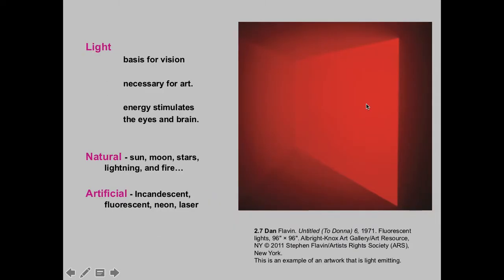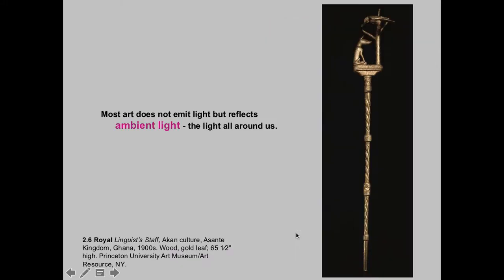Light is a sometimes confusing element. Some artworks are actually made of light — that was not the normal meaning until the late 20th century. This piece is from 1971. Many artists make work out of light; James Turrell is the most famous one, and Dan Flavin is another. Light is the basis for vision — we have a spectrum of colors from the sun, both natural and artificial light. Most art doesn't emit light, but reflects it.